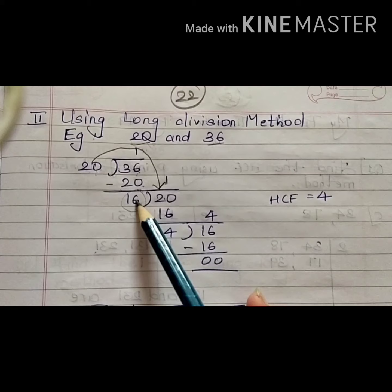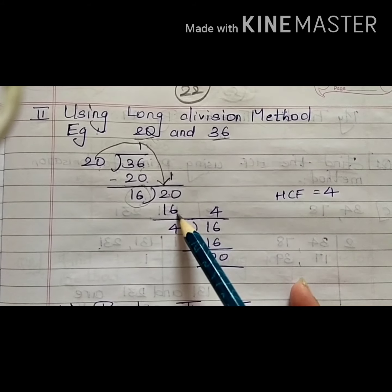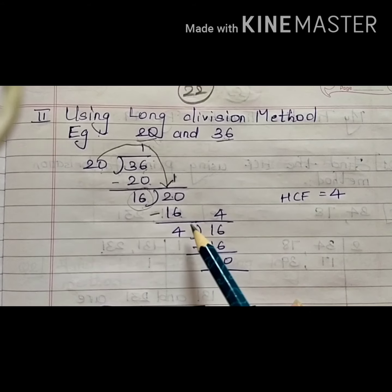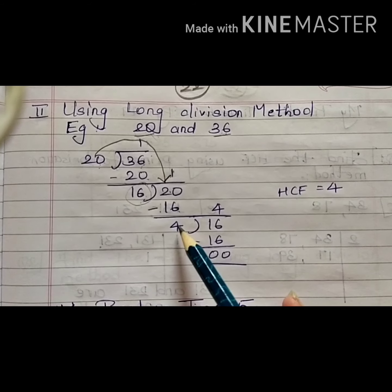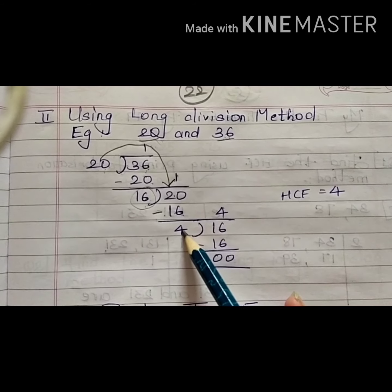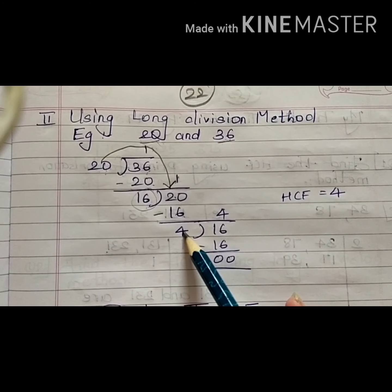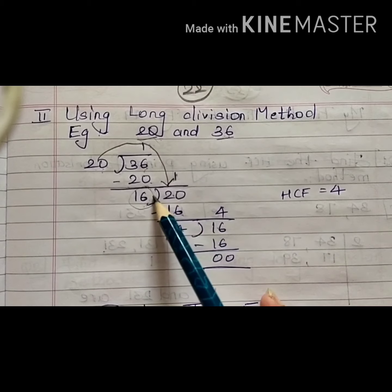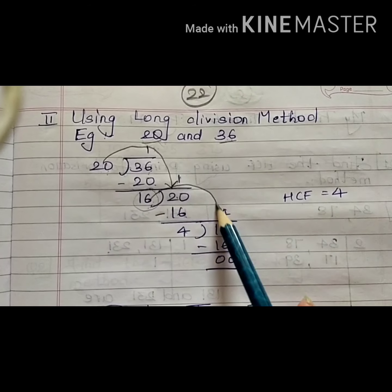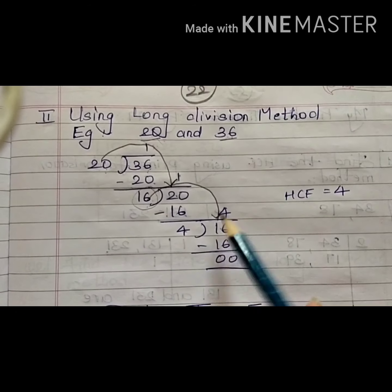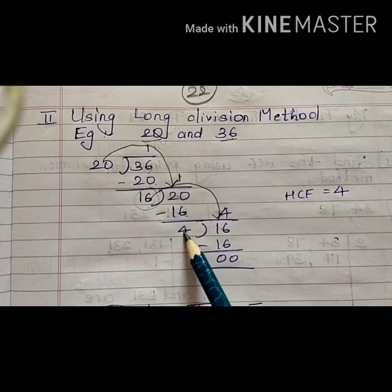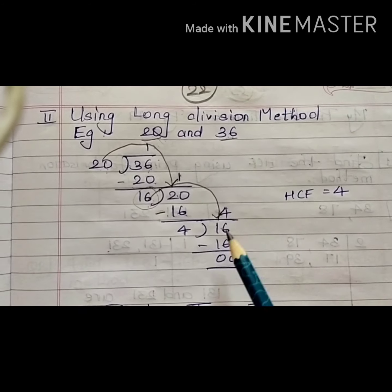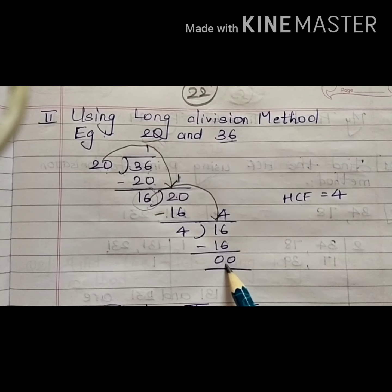Again, start dividing — 16 ones are 16. When I subtract, I get 4. So 4 becomes your next divisor and your next dividend will be the previous divisor. Again, when I divide I get 4 — 4 fours are 16 — and I get the remainder as 0.